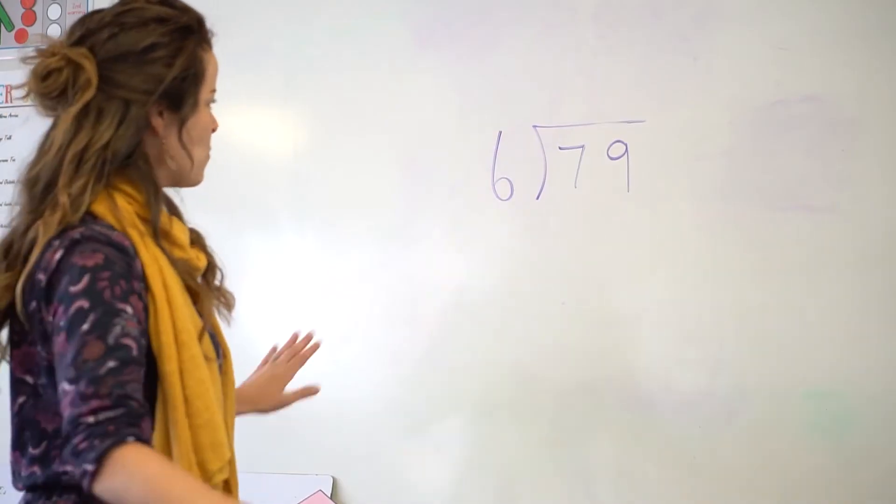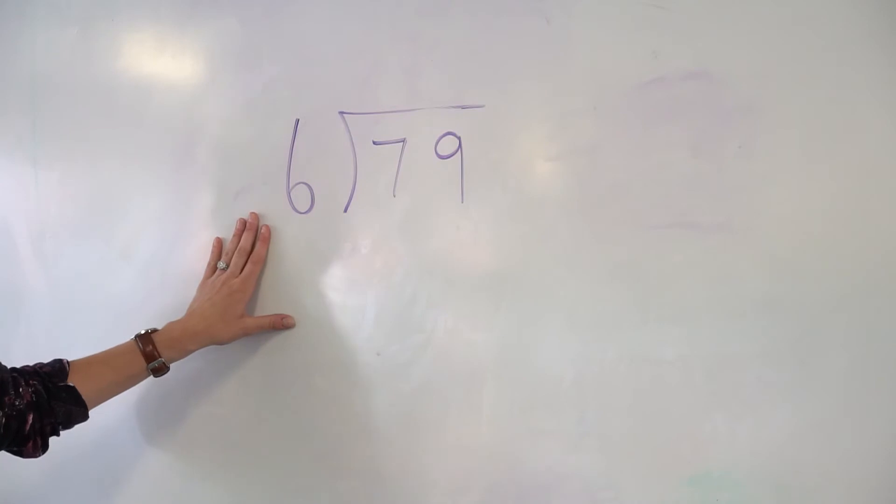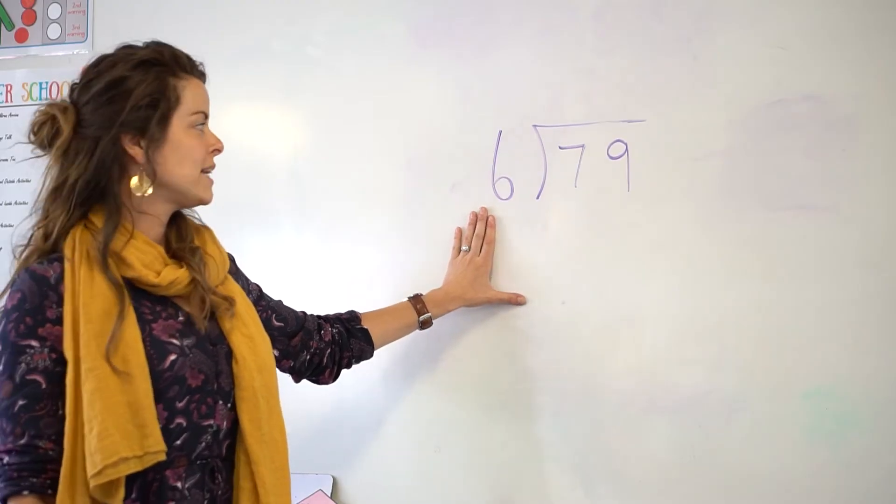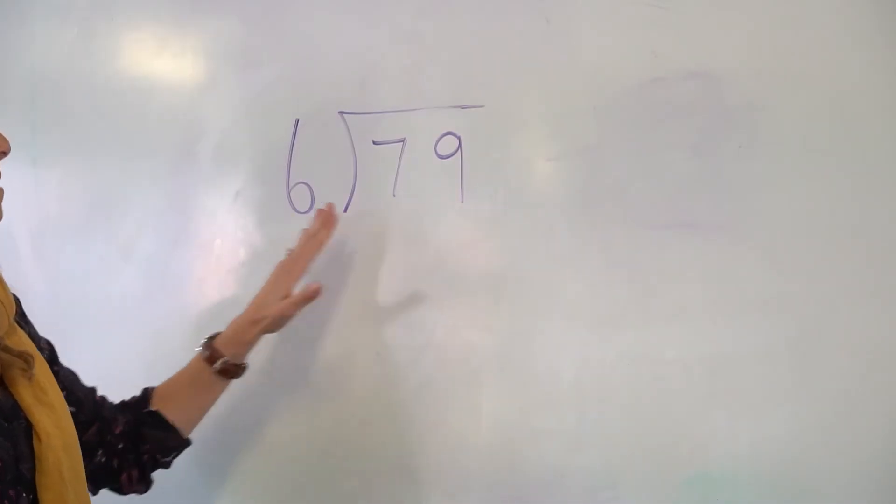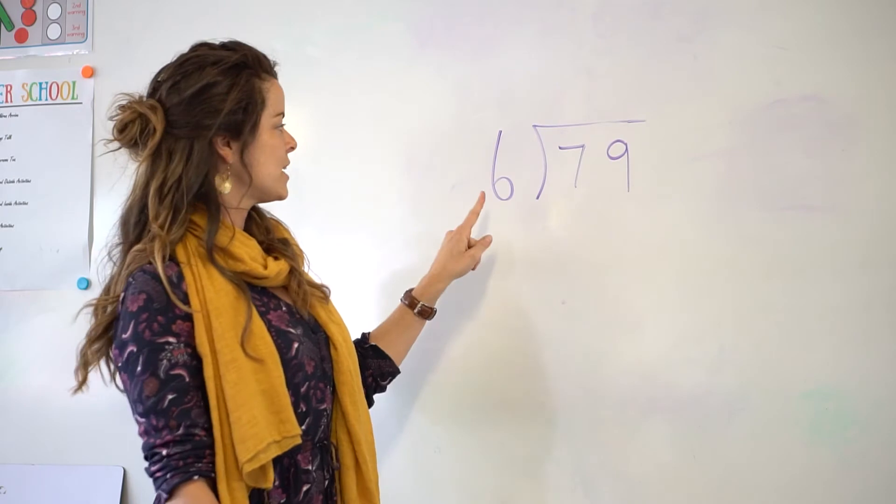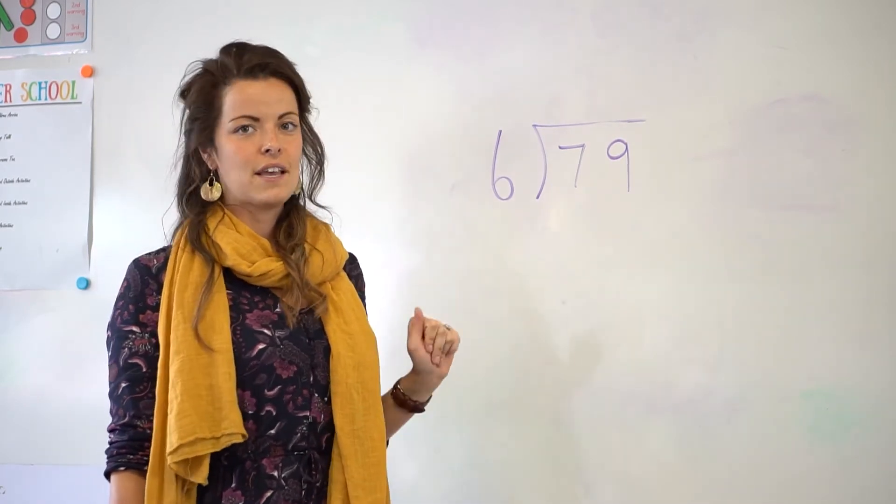The next example I wanted to show you was another bus stop method division. So a double digit divided by a single digit with remainders. The first step we would look at is we wouldn't go with the whole double digit number. We'd make it easier by looking at how many times does 6 go into 7.